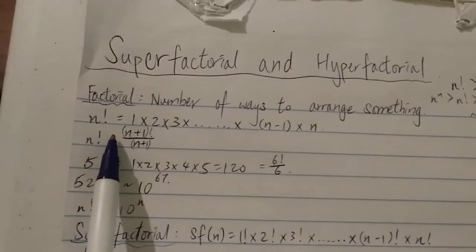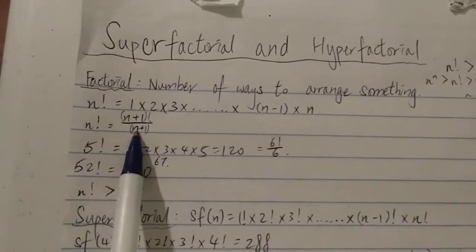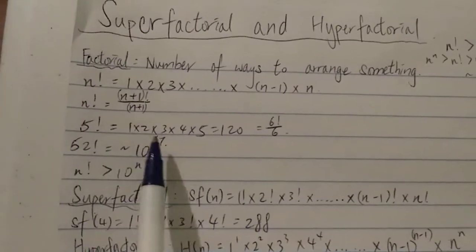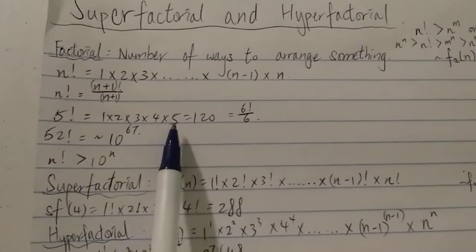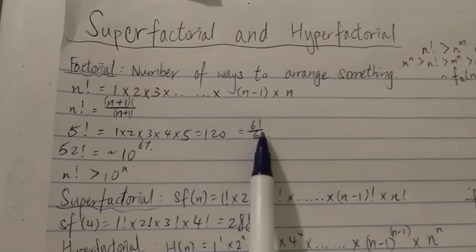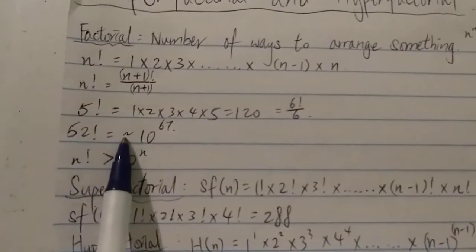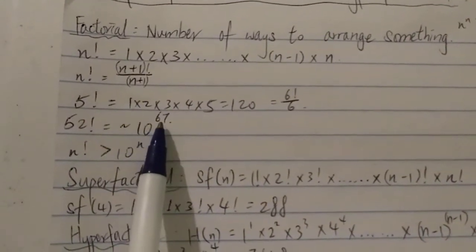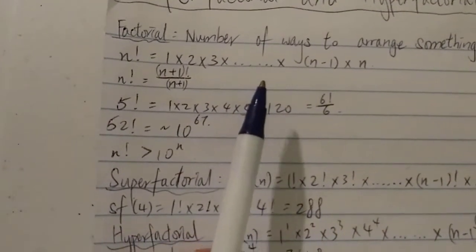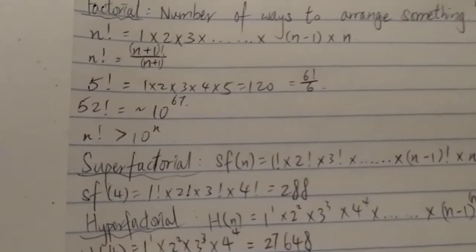Another way to express this: n factorial is equal to (n+1) factorial divided by (n+1). For example, 5 factorial equals 1 × 2 × 3 × 4 × 5 = 120, which also equals 6 factorial divided by 6. And 52 factorial is equal to around 10 to the power of 67.